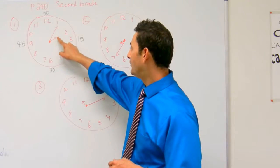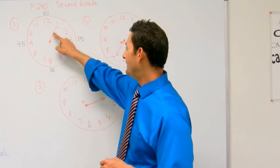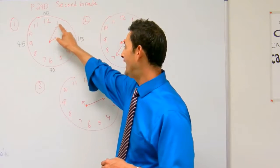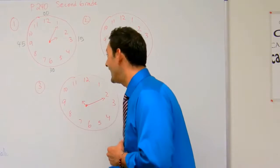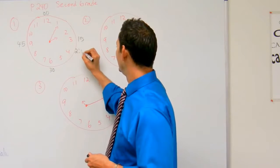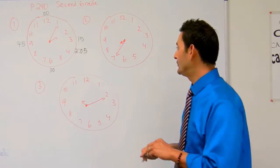So the small hand is pointing close to the two, so that's going to be two, and then the minute hand is zero five. That's going to be 2:05 for number one.